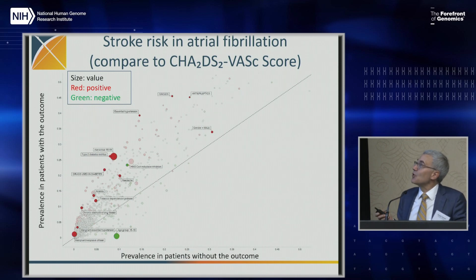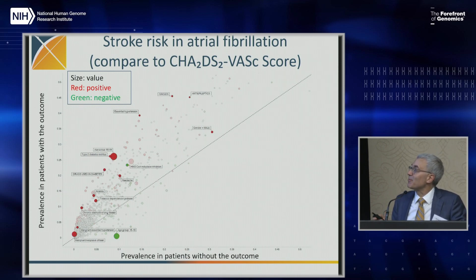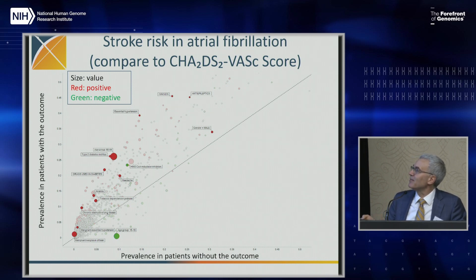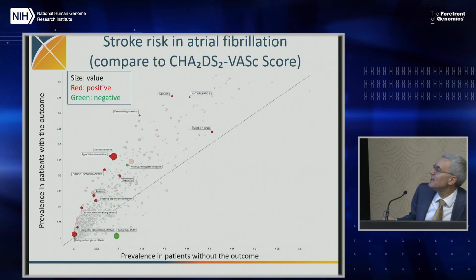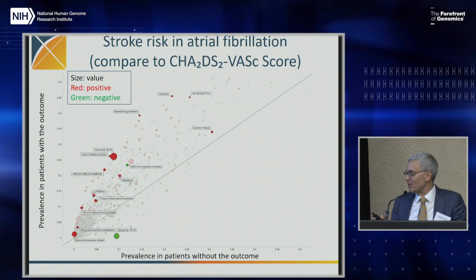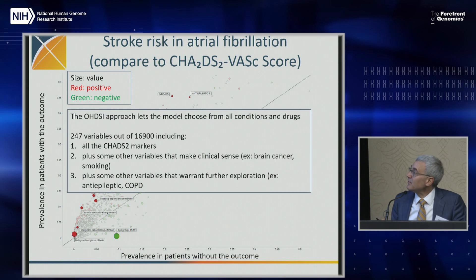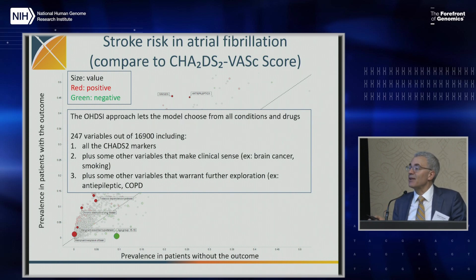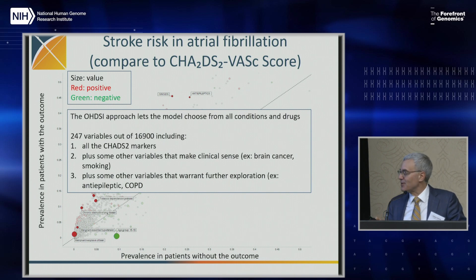Here's an example: stroke risk in the setting of atrial fibrillation. Green means protective, red means harmful. We see that younger patients are less likely to get a stroke, and patients with type 2 diabetes are more likely. When we do this analysis, we duplicate the current clinical predictor — the CHADS2 predictor — and find other variables that make sense, plus some we need to investigate further.